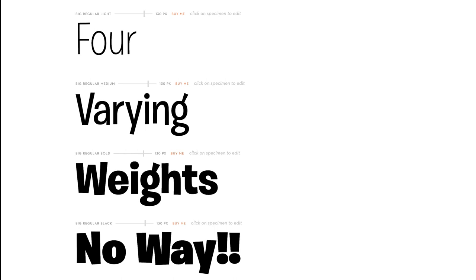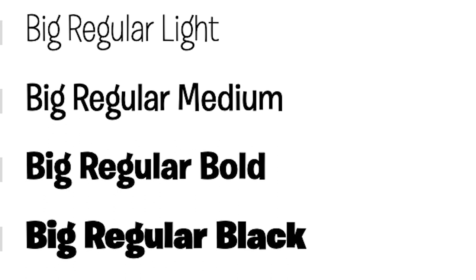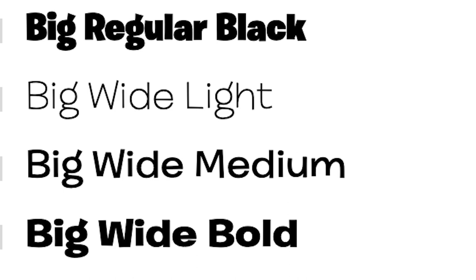Some of these styles include the popular big condensed black, along with big condensed bold and light, big wide light medium bold and black, and small light medium bold and black. Italicized versions of these styles can be found as well.